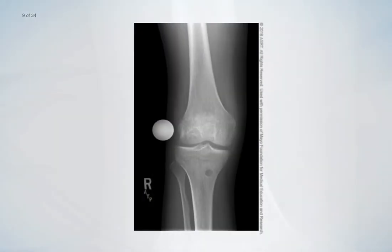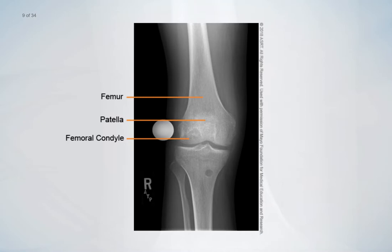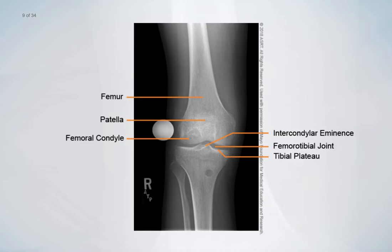The AP projection shows a frontal view of the entire knee including the distal femur, the patella, and the femoral condyles. The femoral tibial joint space, the tibial plateaus, and the intercondylar eminence are visualized. The proximal tibia and fibular head are also seen.